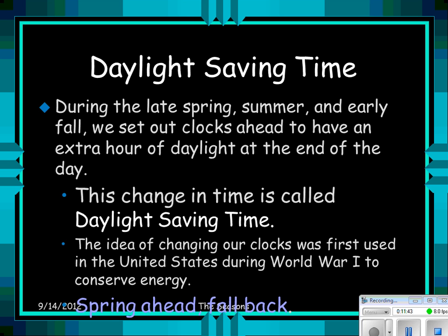Daylight saving time — note there's no S on the end of saving. During the late spring, summer, and early fall, we set our clocks ahead to have an extra hour of daylight at the end of the day. This is called daylight saving time. It was first used in the United States during World War I to conserve energy. Remember: spring ahead an hour, fall back an hour.